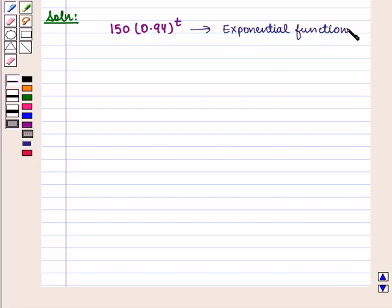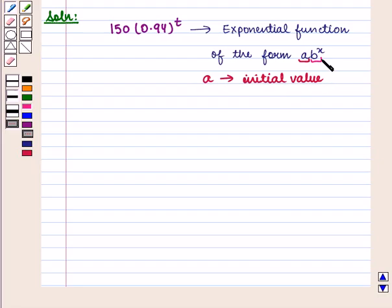This is of the form a times b raised to power x, where a is the initial value and b is the base, which gives us rate of growth or decay.